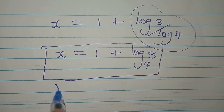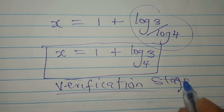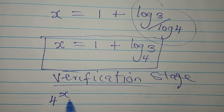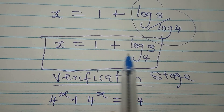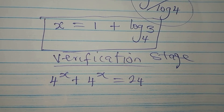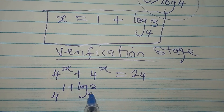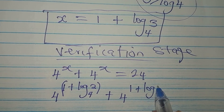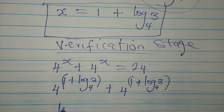Now let's verify, as we always do. The original equation is 4 to the power of x plus 4 to the power of x equals 24. Substituting x as 1 plus log₄3, we have 4 to the power of (1 plus log₄3) plus 4 to the power of (1 plus log₄3). The question is: will this give us 24 on the other side?